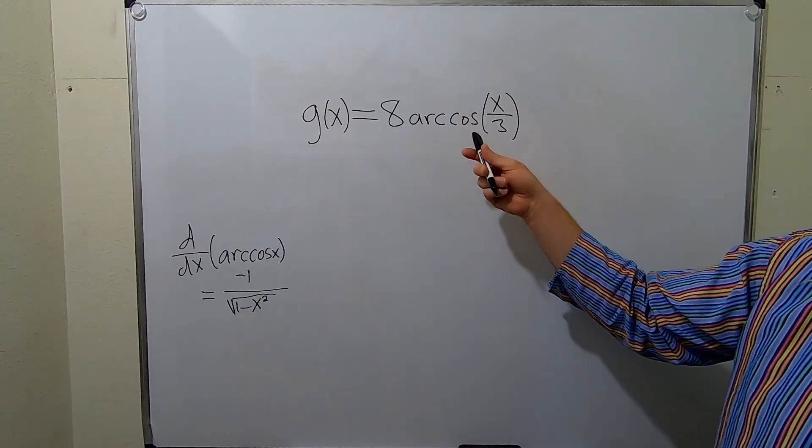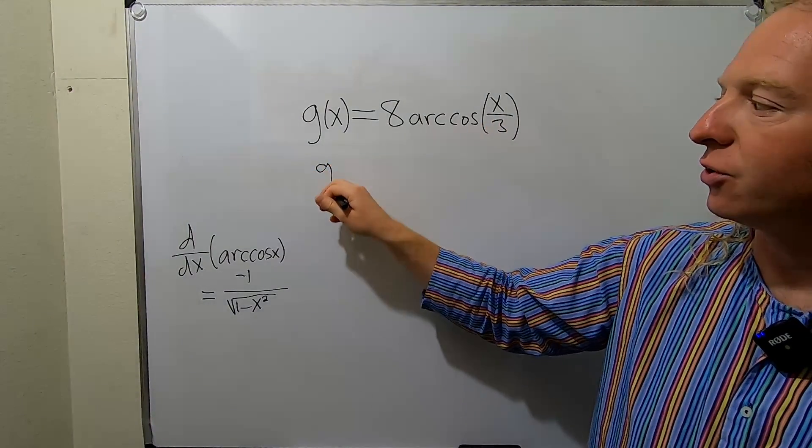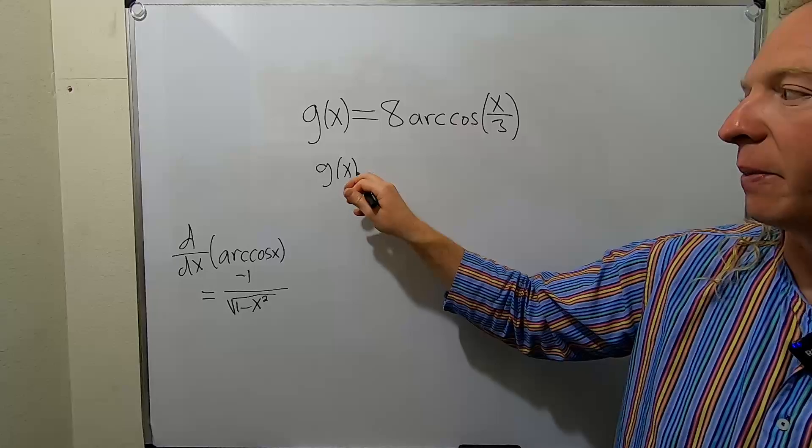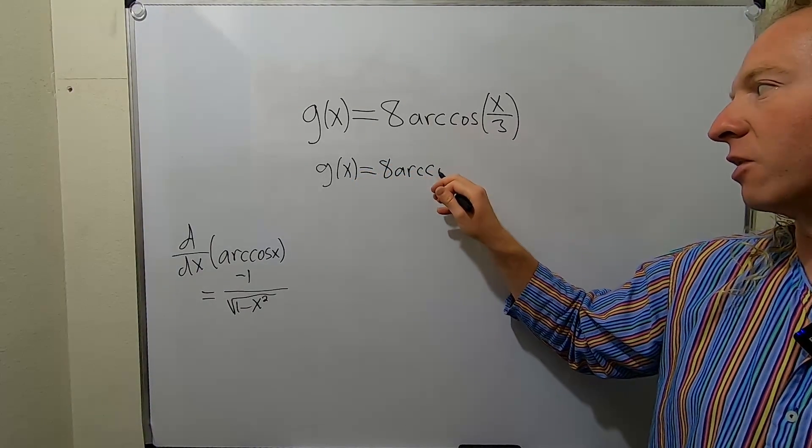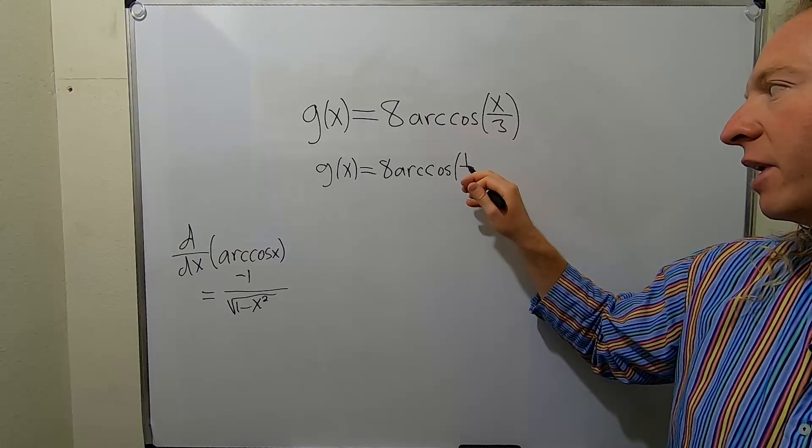Okay, so here we have the arc cosine of x over 3. So it might be beneficial to rewrite this in another way before we take the derivative, because we do have to use the chain rule. So this is arc cosine of 1 third x.